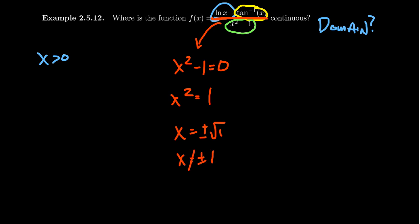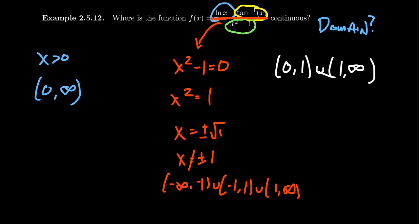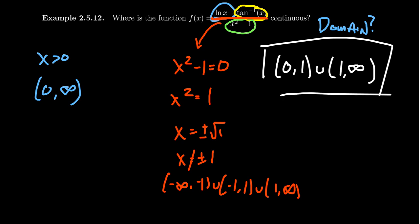So the domain of this function combines the natural log's requirement of 0 to infinity with the division restriction excluding x equals plus or minus 1. The denominator restriction alone gives negative infinity to negative 1, union negative 1 to 1, union 1 to infinity. Putting these together, the domain of our function is 0 to 1, union 1 to infinity. Therefore, since this function is continuous on its domain, it will be continuous on (0, 1) and (1, infinity).